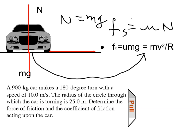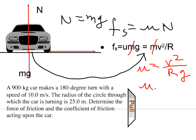One of the things you will see here is that the mass in this equation cancels off, so mu is just equal to v squared over rg. For these numbers, mu will turn out to be 0.4, for v equals 10, r equals 25, and g equals 9.8.